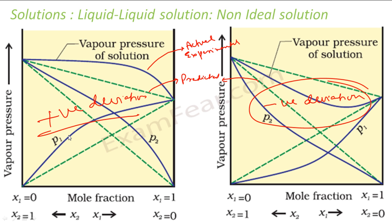So the experimental value of total vapor pressure is sometimes more than the theoretical value and sometimes less. If the experimental value is more than the theoretical value, it shows positive deviation — that is the left-hand side case. If the experimental value is less than the theoretical value, it shows negative deviation. The same applies to partial pressures of component 1 and component 2.